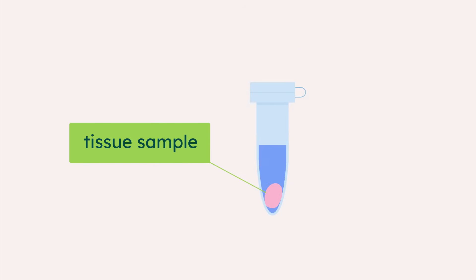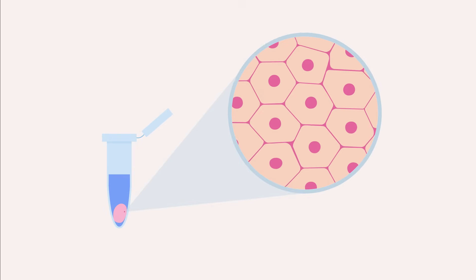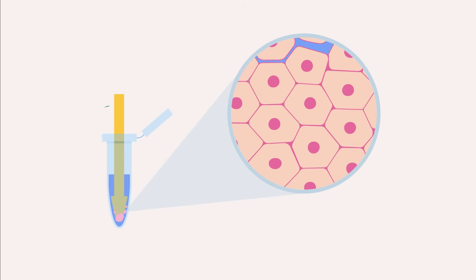We start with a tissue sample. To disrupt the tissue, we crush it with a pestle, and this breaks the cells apart.